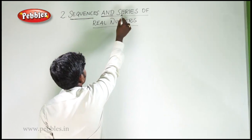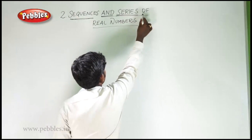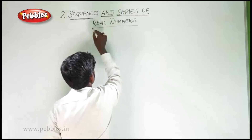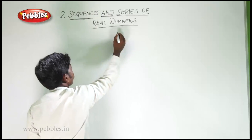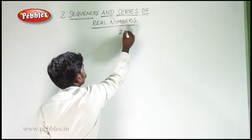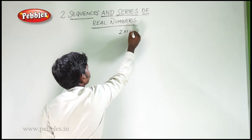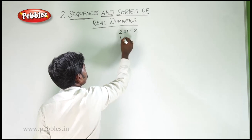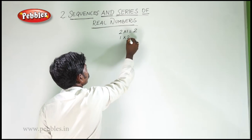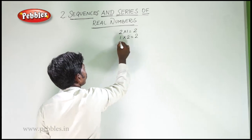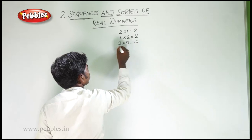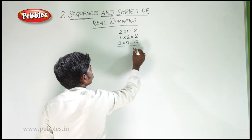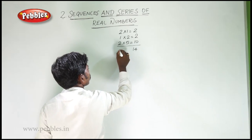Sequence and series of real numbers. You have 2 mark allotment: 2 one-mark questions, 1 two-mark question, and 2 five-mark questions — totally 14 marks.